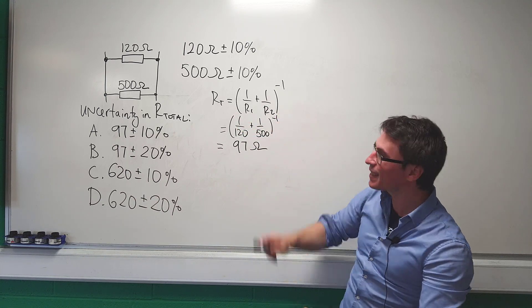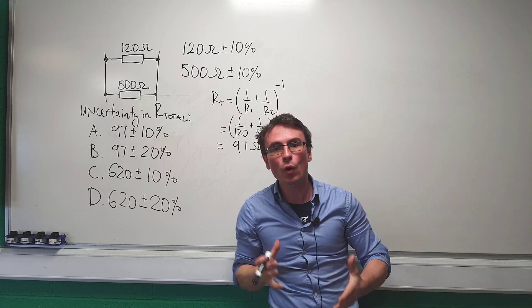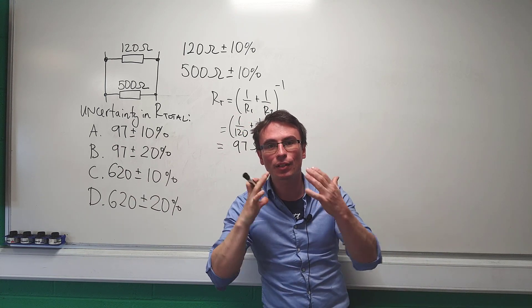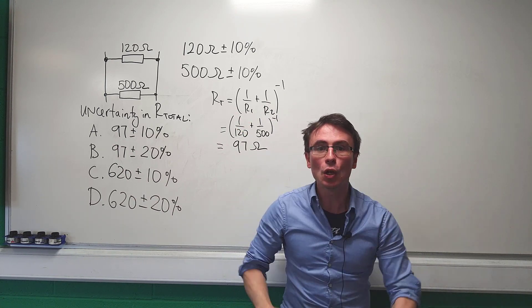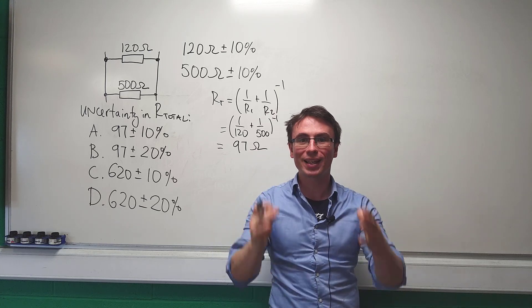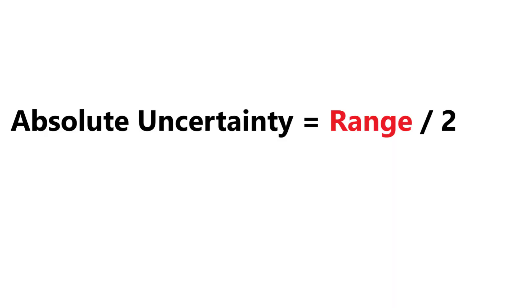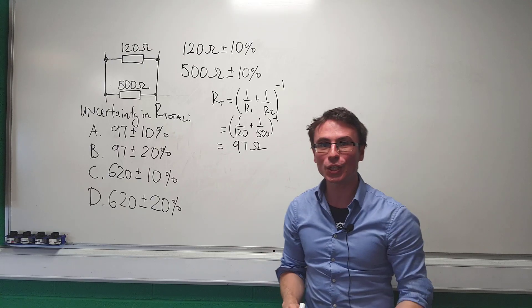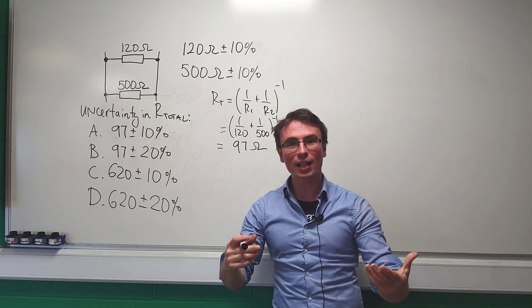Because this is a non-standard formula, we need to use the rule that the uncertainty is equal to half of the range. What is the range of those values?